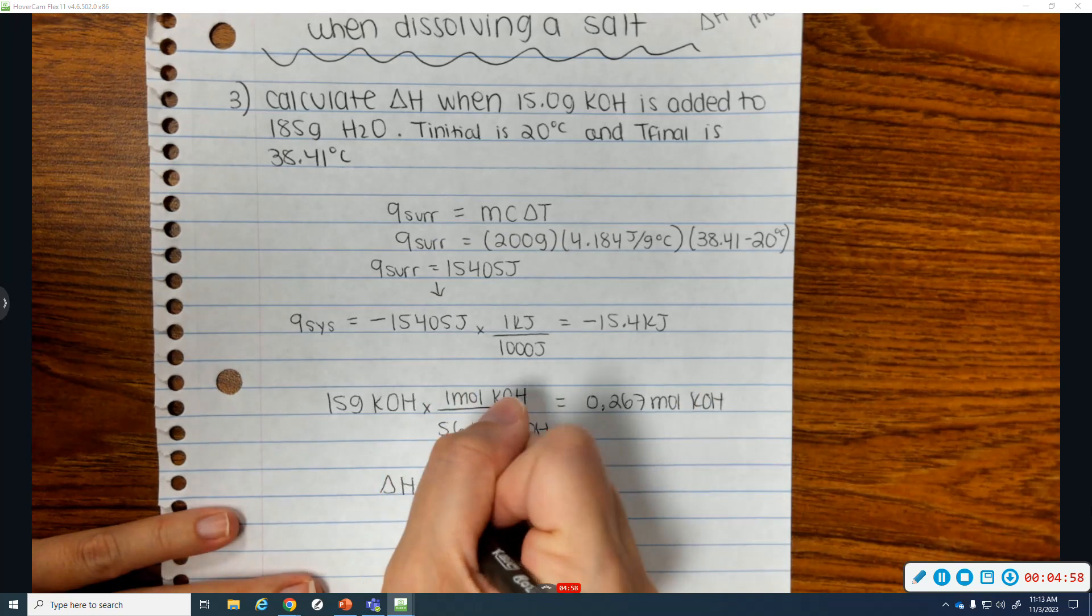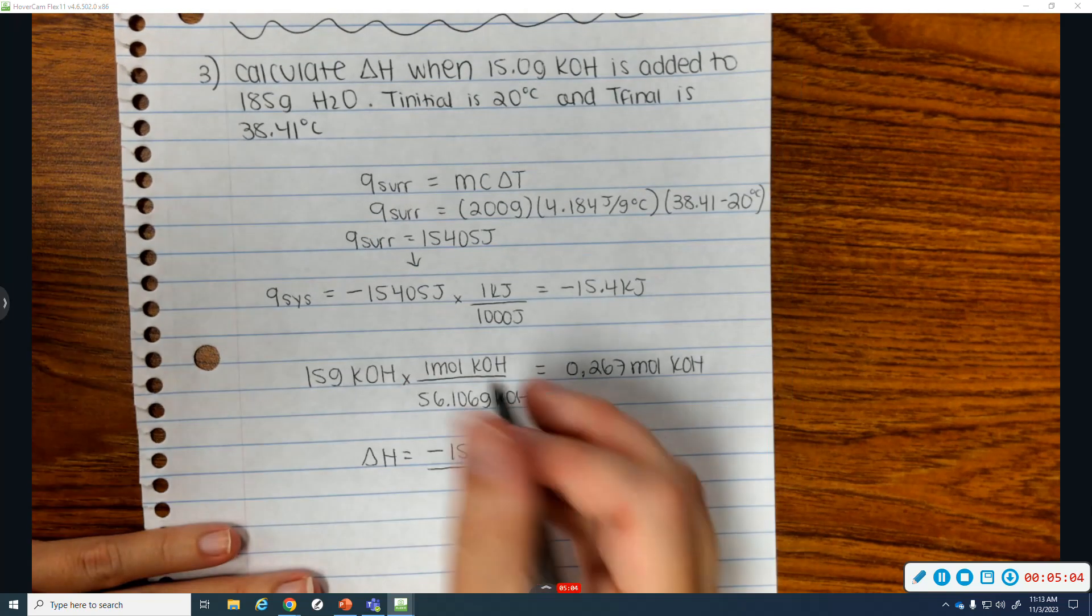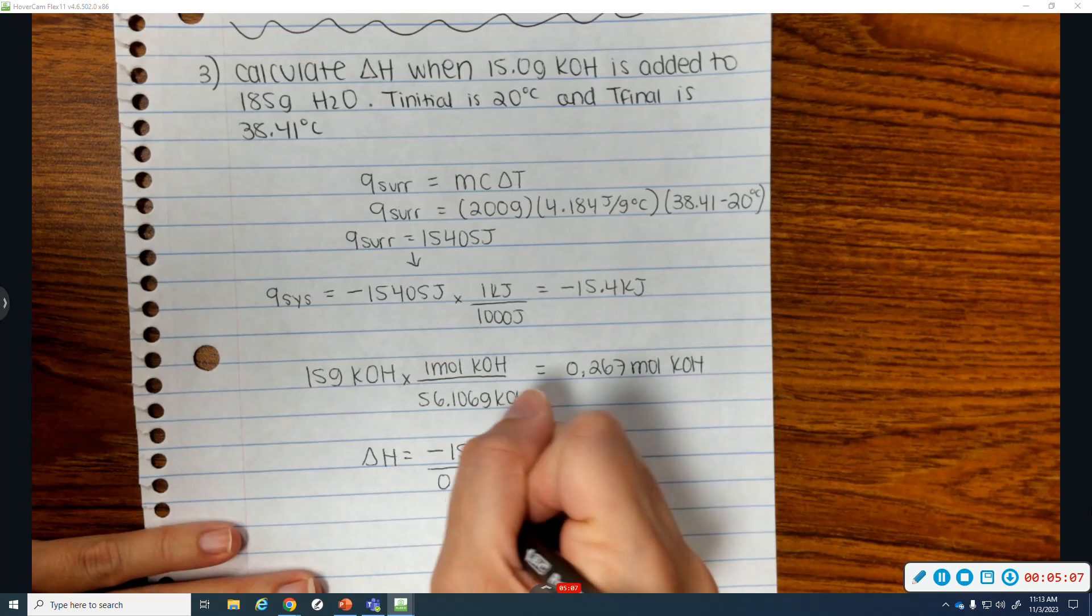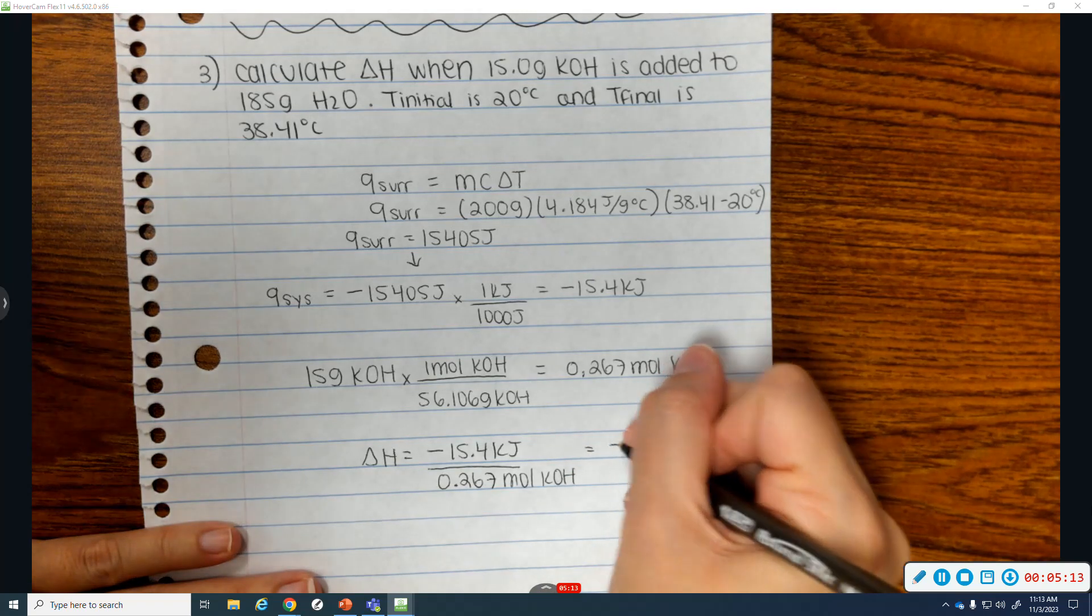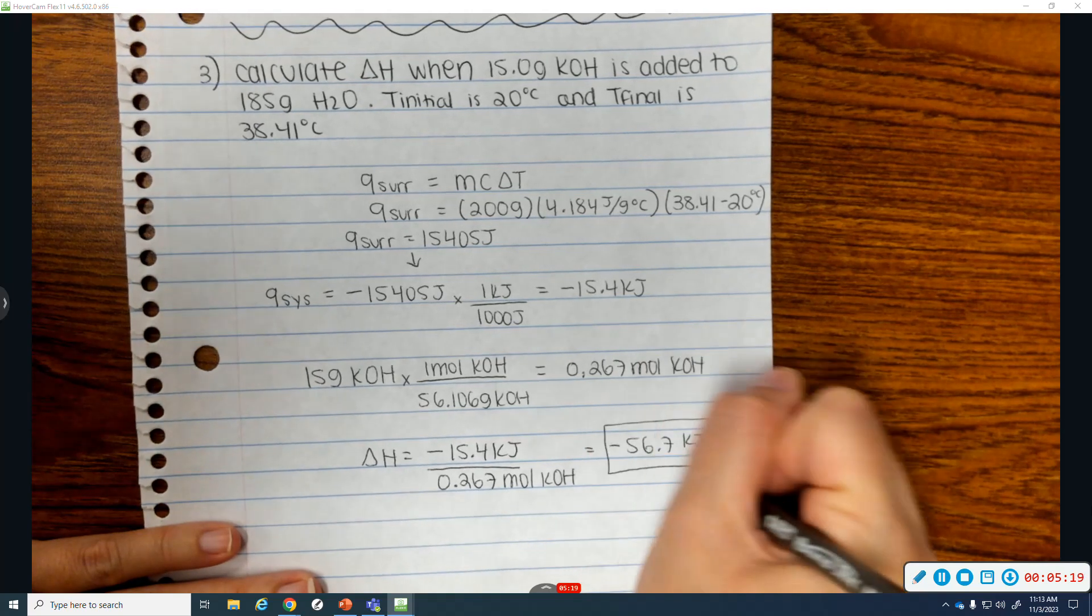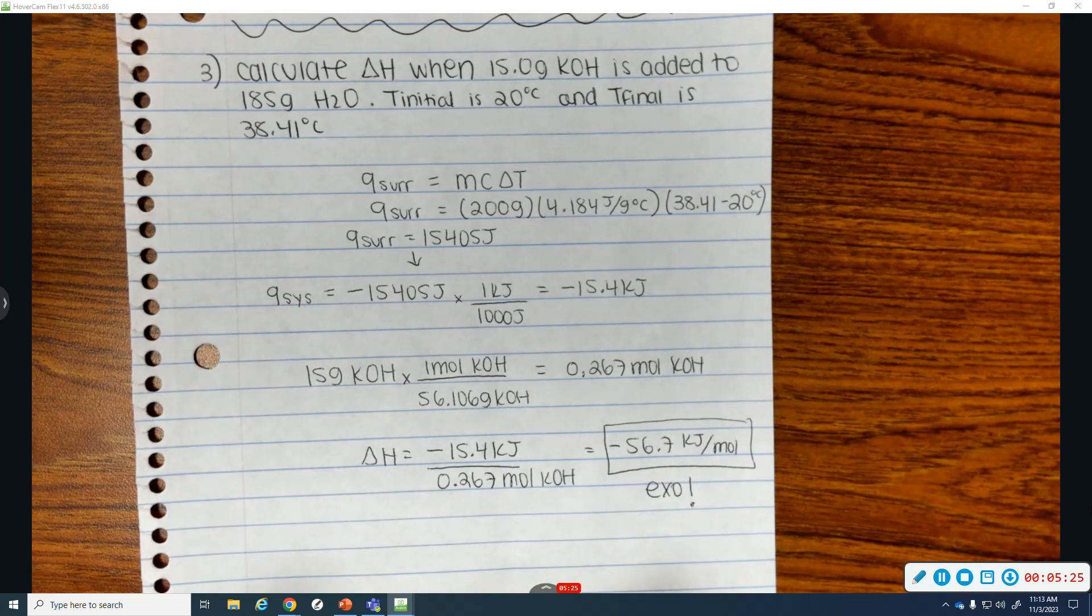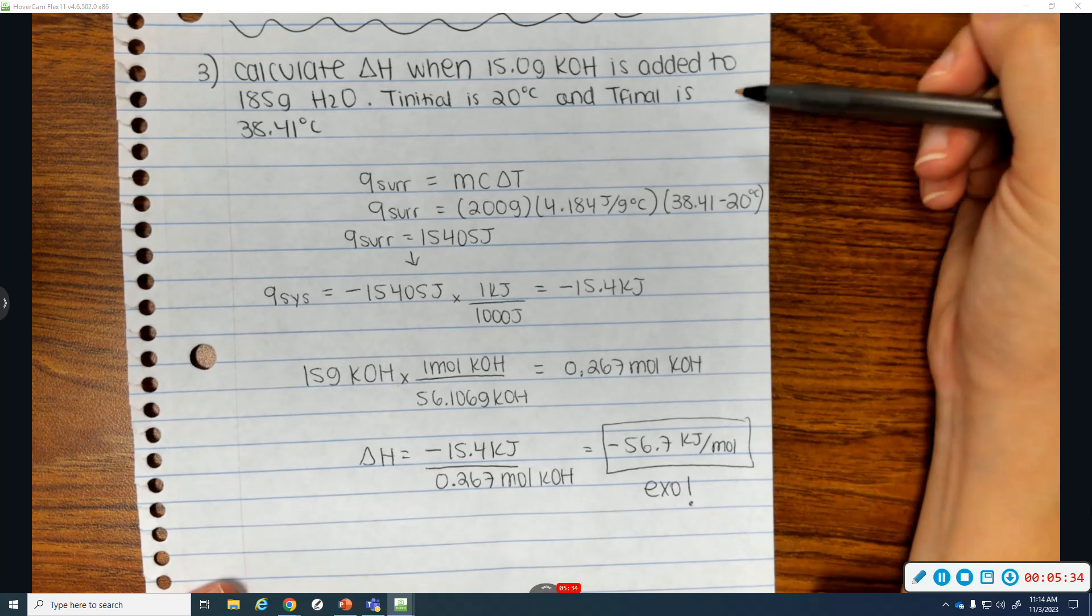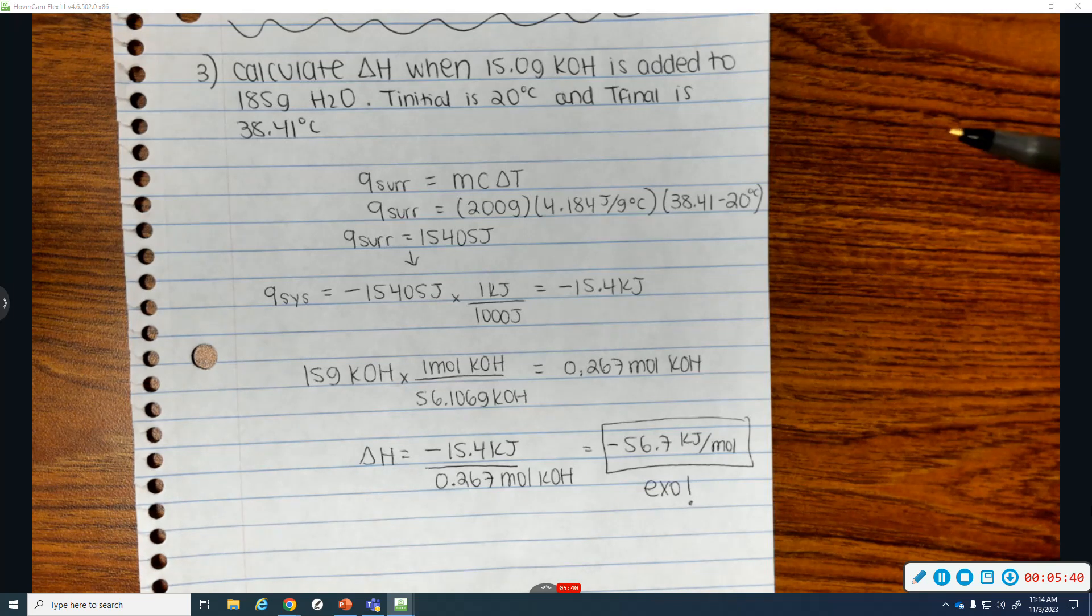And so to get my enthalpy change, it is your kilojoules divided by your moles. So negative 15.4 divided by 0.267. That gives me an enthalpy change of negative 57.6 kilojoules per mole. Because it's a negative enthalpy, that means this is an exothermic change, which means when KOH dissolves in water, it releases energy or it gives off energy. And that makes sense because the temperature of my surroundings went up, which means the KOH was giving off heat, which matches this.